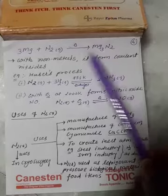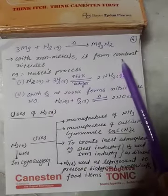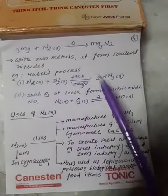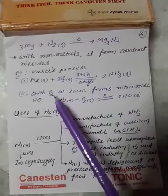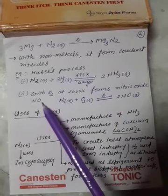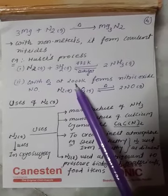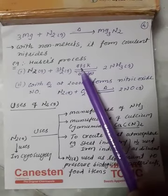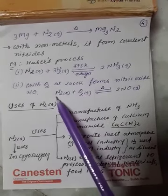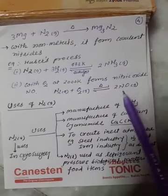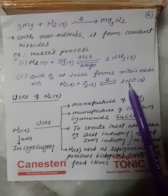Nitrogen combines with non-metals also to form non-metallic or covalent nitrides. Nitrogen with hydrogen forms ammonia - hydrogen is non-metal, nitrogen also non-metal. With oxygen it forms nitrogen monoxide and other oxides. See temperature we require here: higher temperature. Here is 773 kelvin, here is 2000 kelvin. Nitrogen combines with oxygen at high temperature to form two moles of nitrogen monoxide. All the reactions are important, prepare it well.